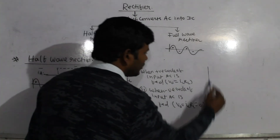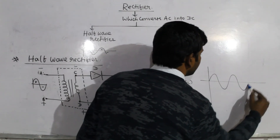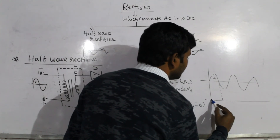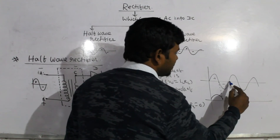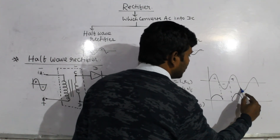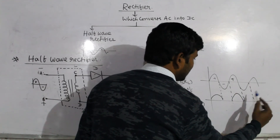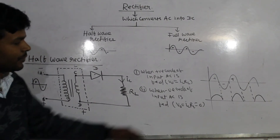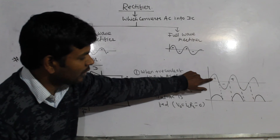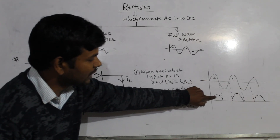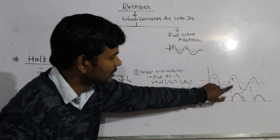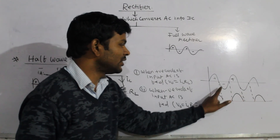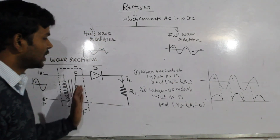Now we will see the waveform. The input AC has positive cycles and negative cycles. For the positive cycle, we get an output. For the negative cycle, we get no output voltage. So for a full cycle of AC, we only get half a cycle of output. That is why the name is half-wave rectifier.